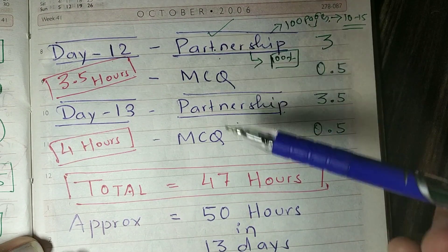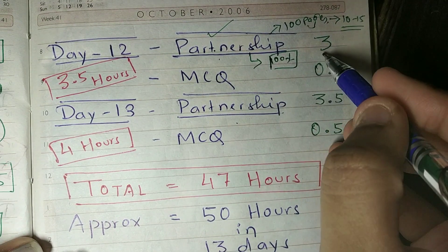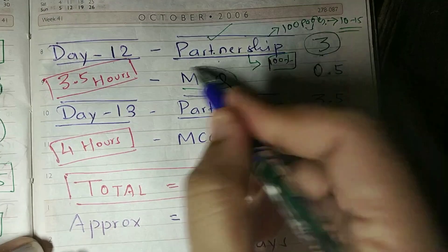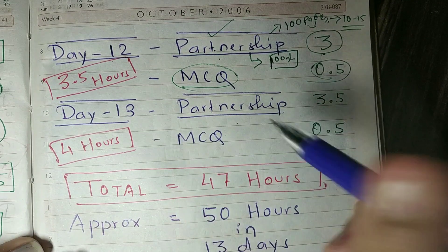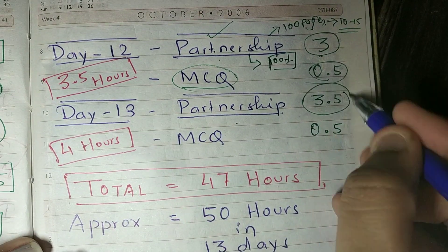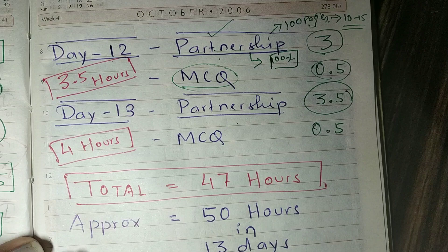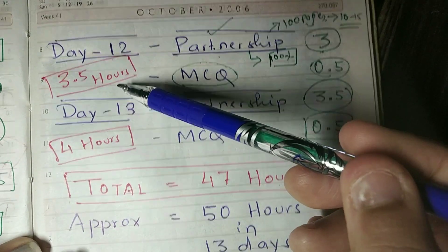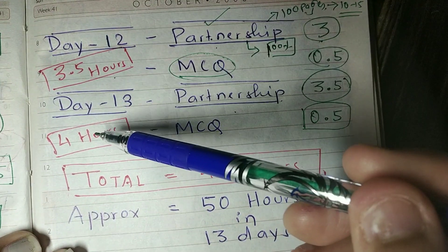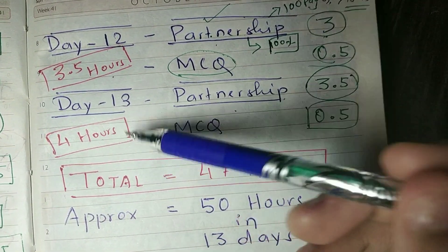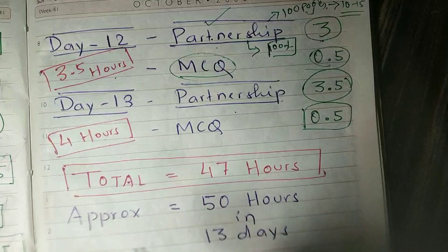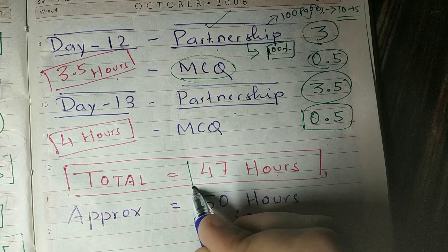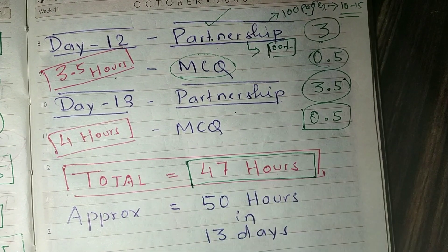Since Partnership is a very large chapter, I've divided it across two days. On Day 12, you need to contribute 3 hours to Partnership plus some MCQs. On Day 13, you again need to give 3 hours to Partnership plus MCQs. So Day 12 requires 3.5 hours and Day 13 requires 4 hours. When I calculated all the hours together, the total comes to 47 hours for Paper 5 in 13 days.